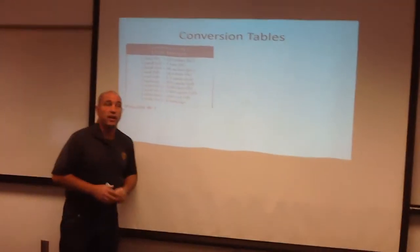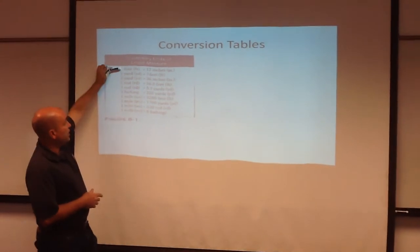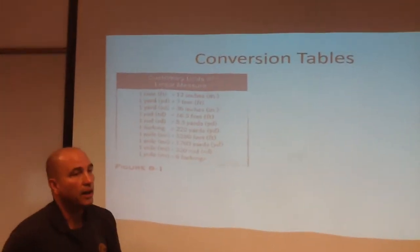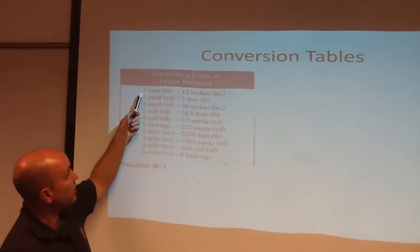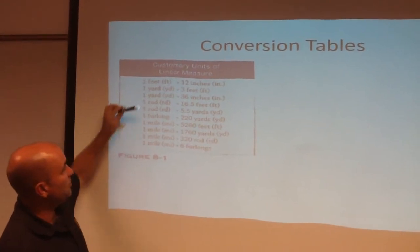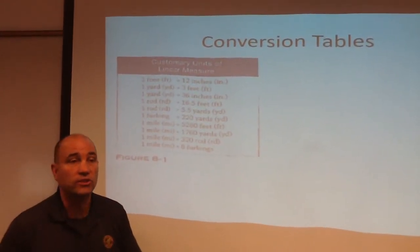So here's what's called a conversion table. I know it's a little bit blurry. We're doing the best we can. These are conversions. A lot of these you're really familiar with, like feet and yards and yards to inches. But what about some of these bad boys, like rods and furlongs and miles and stuff? Those are ones you're not familiar with so much.